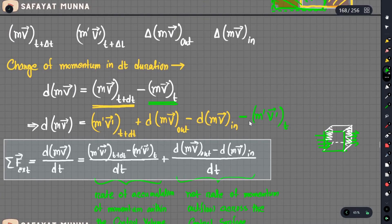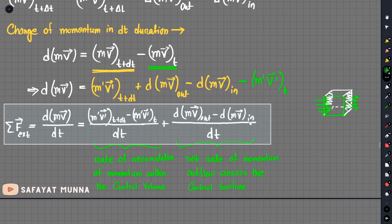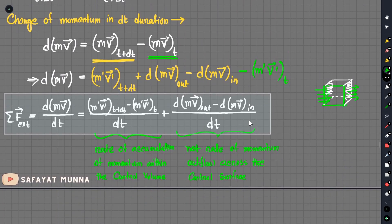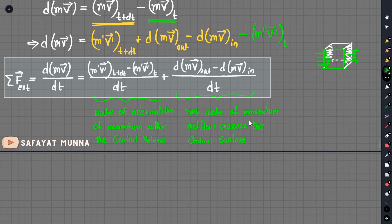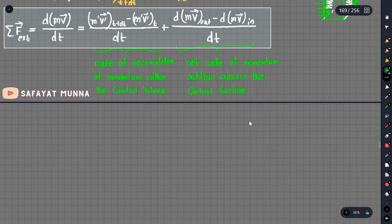Okay, so in the last video, we looked at this problem. We looked at the external force, and we looked at the same simplification. We looked at this equation — the impulse-momentum equation in the J direction is the same.